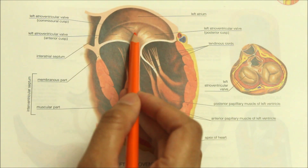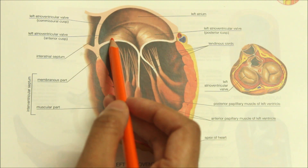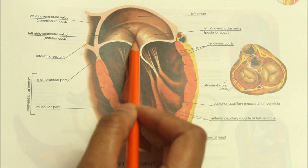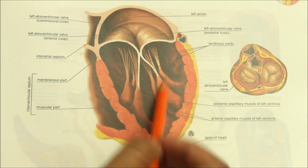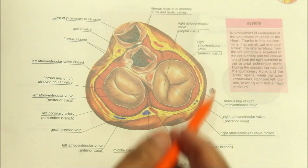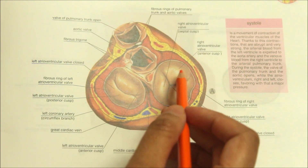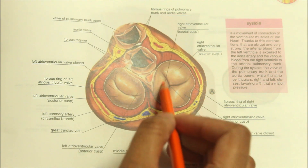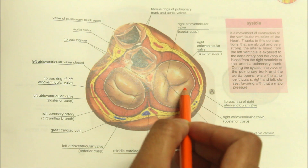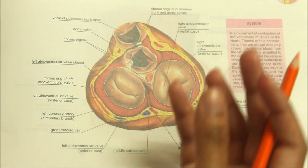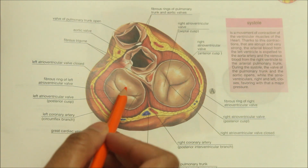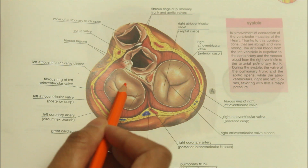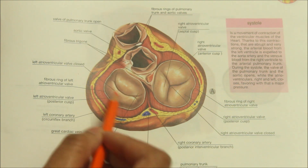Blood vessels are present only in the fibrous ring and in the basal one-third of the cusps. Nutrition to the central two-thirds of the cusp is derived directly from the blood in the cavity of the heart. The tricuspid valve has three cusps: the anterior cusp, the septal cusp, and the posterior cusp, which lie against the three walls of the ventricle. The mitral or bicuspid valve has two cusps — a large anterior or aortic cusp and a small posterior cusp.